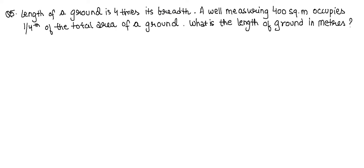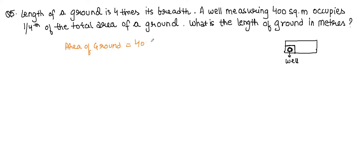Question number five: the length of a ground is 4 times its breadth. A well measuring 400 square metres occupies one-fourth of the total area of the ground. So total area = 400 × 4 = 1600 square metres.